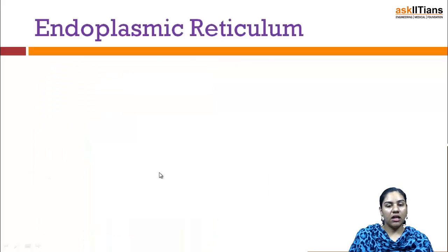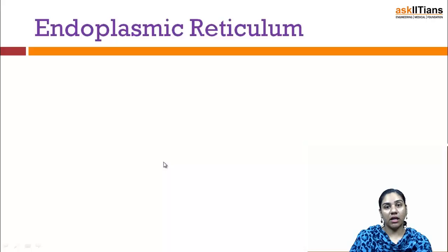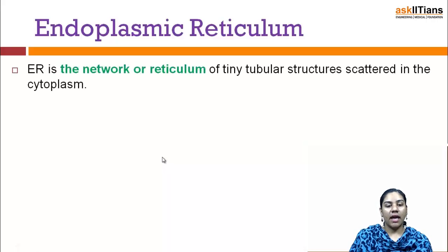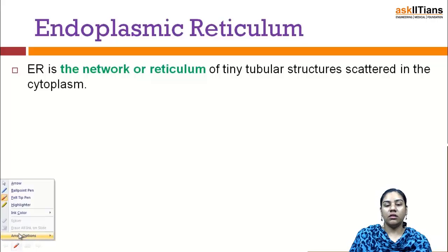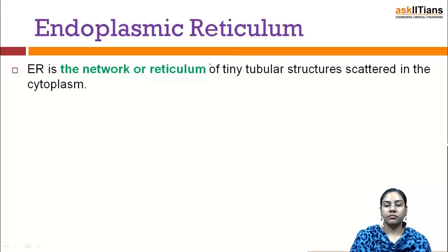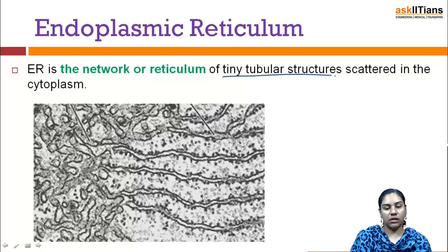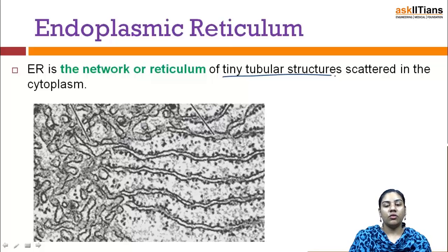Under the endomembrane system, first we will discuss about the endoplasmic reticulum. Endoplasmic reticulum is nothing but a network or reticulum of tiny tubular structures that are scattered in the cytoplasm. This is the real picture showing the endoplasmic reticulum here.